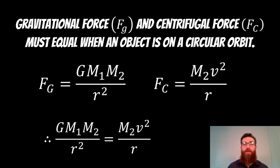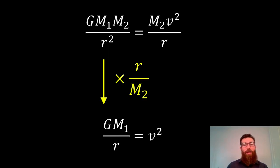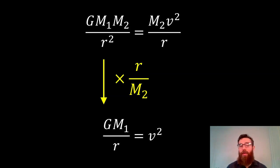We already know from the definition of Lagrange points that the gravitational forces and the centrifugal forces must equal when an object's on a circular orbit. We've got the equation for gravitational force on the upper left and centrifugal force on the upper right. Since they must equal on a circular orbit, we can equate them. Multiplying by R and dividing by M2, we get velocity squared equals GM1 over R.